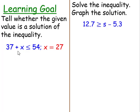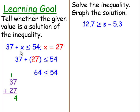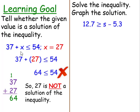Instead of writing 37 plus x, we're going to replace this x, that means substituting 27 in for x. This is going to give us 37 plus 27, which is 64, and 64 is not less than or equal to 54, so 27 is not a solution of the inequality.